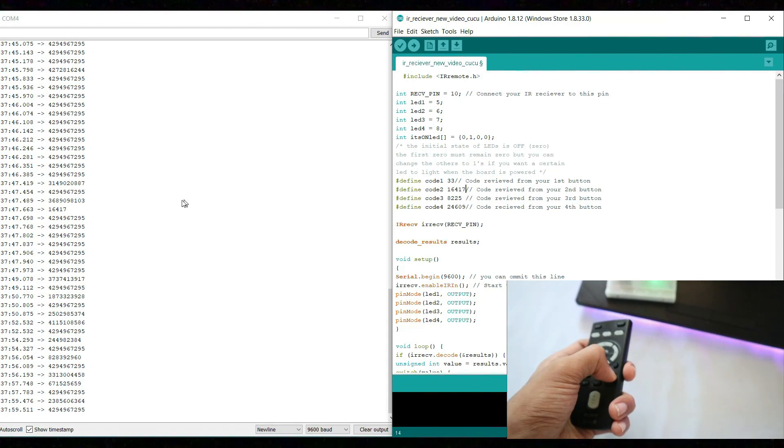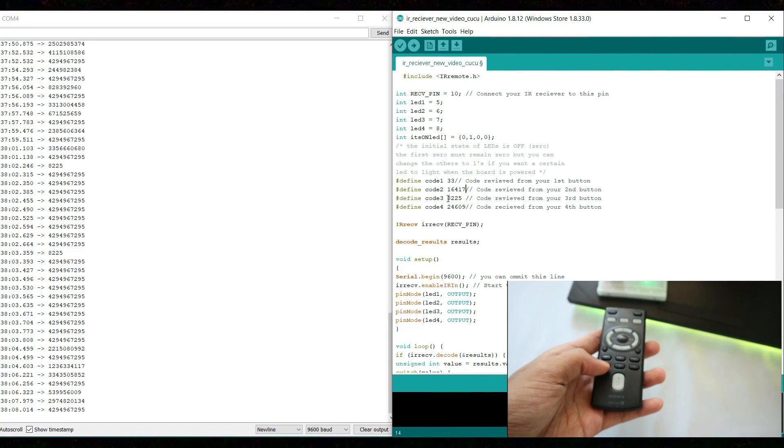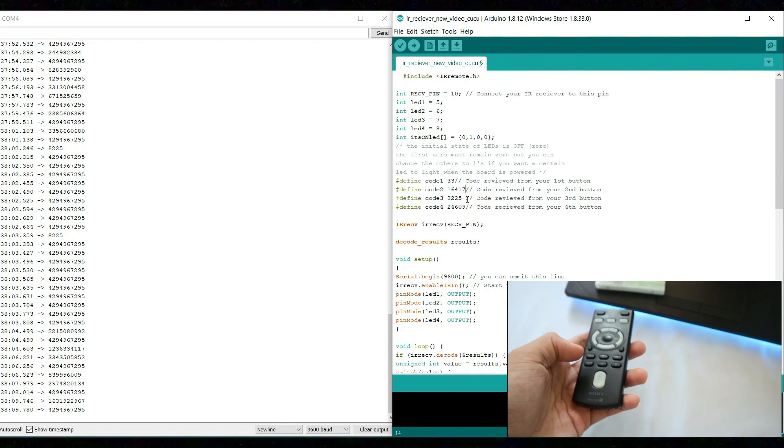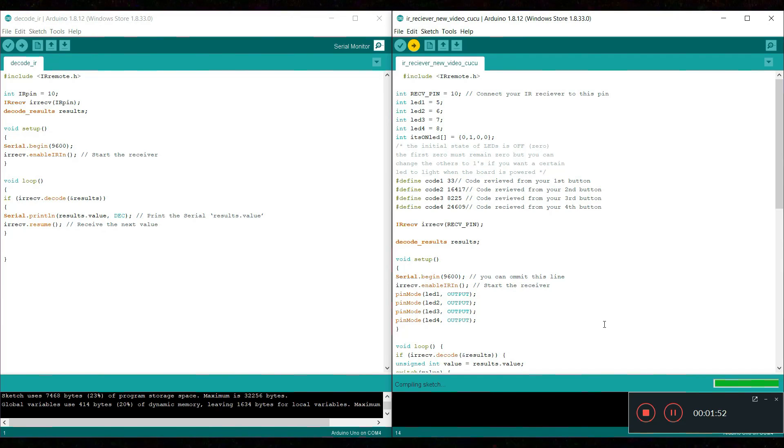Now let's press our third button and our third button shows 8225. I have already done that. Now let's press our fourth button and you can see it's 24609. And I have also done that. Now upload it.